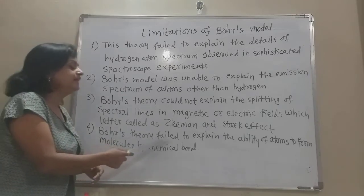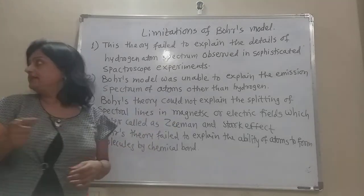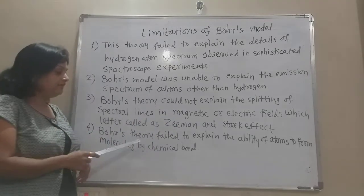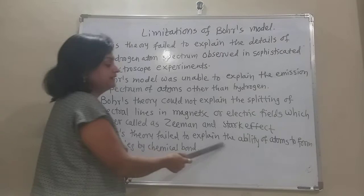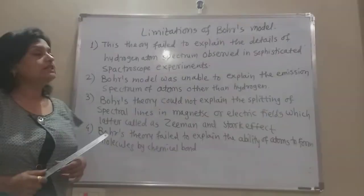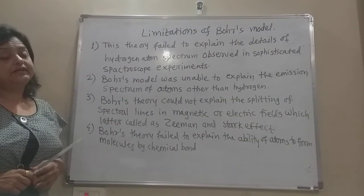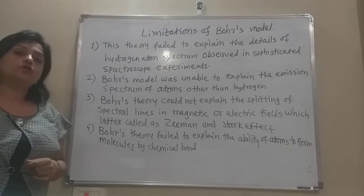The fourth and final limitation of Bohr's theory is that it failed to explain the ability of atoms to form molecules through chemical bonds. How atoms combine to form molecules via chemical bonding could not be explained by Bohr's theory. These four are the main limitations of Bohr's model.